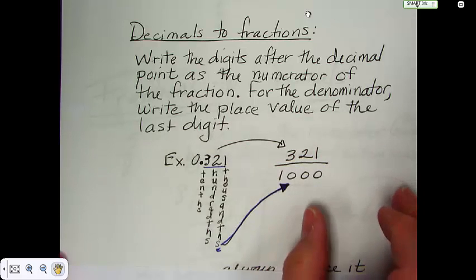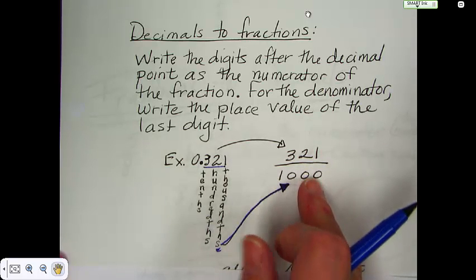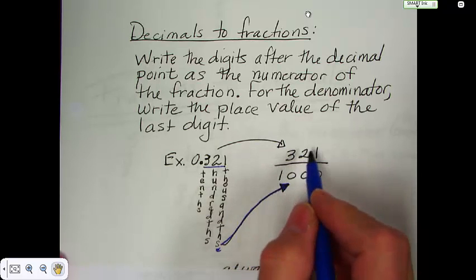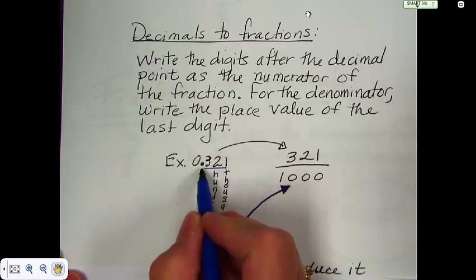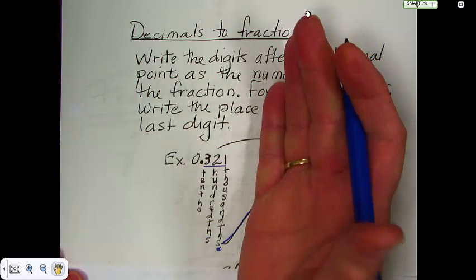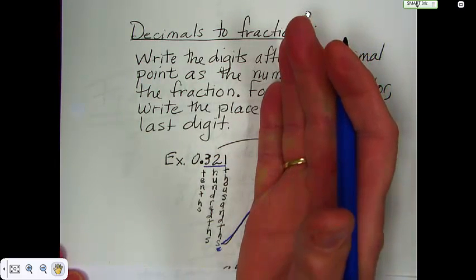Once you're writing it into the fraction and you put that in a denominator, you no longer need to put the decimal point in. So you're going to write 321 thousandths, which is exactly what you would say if you said this as not a fraction. You would say 321 thousandths.